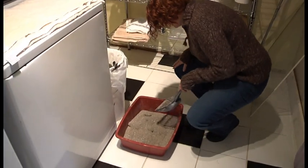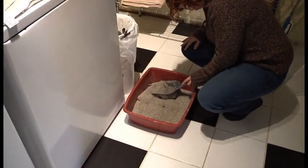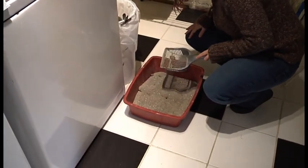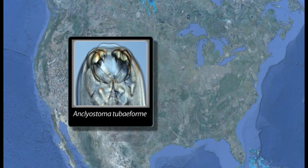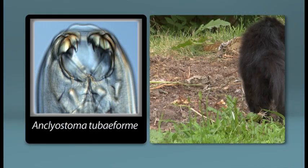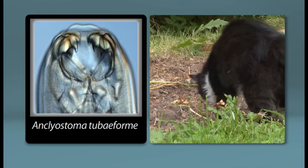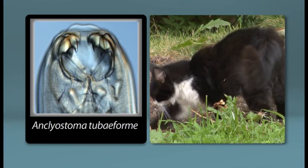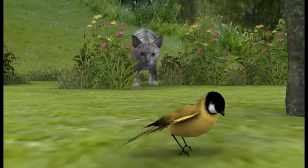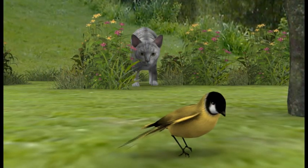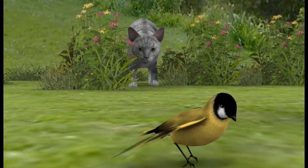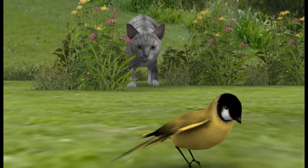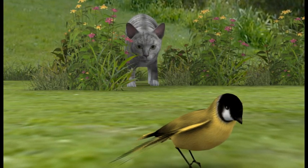Sometimes the stools contain mucus and blood. Ancylostoma tubaeforme is another parasite found throughout much of the United States. Cats acquire this infection by the penetration of larvae from contaminated soil through the skin. Infections can also be acquired through the ingestion of rodents or birds that have been infected with the larvae.